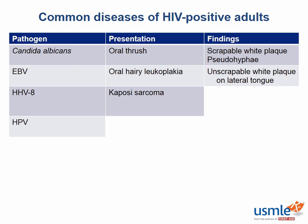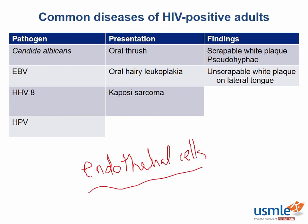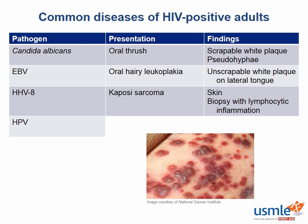Human herpes virus 8 causes the infamous lesions seen in AIDS patients called Kaposi's sarcoma. Kaposi's sarcoma is a dark, violaceous nodule that represents HHV-8 viral infection of endothelial cells. They cause vascular proliferations most commonly found on the external skin, but they can also be seen in the gastrointestinal tract and in the lung. On biopsy, we will see lymphocytic inflammation.